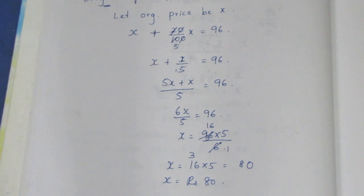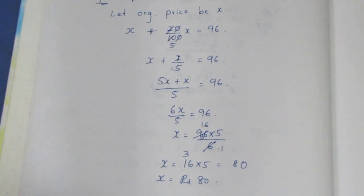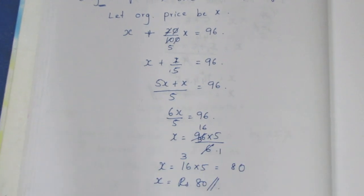So the original price of Urad dhal per gram is Rs. 80. This is how you can get the answer using word problems. That is the sum. Thank you.